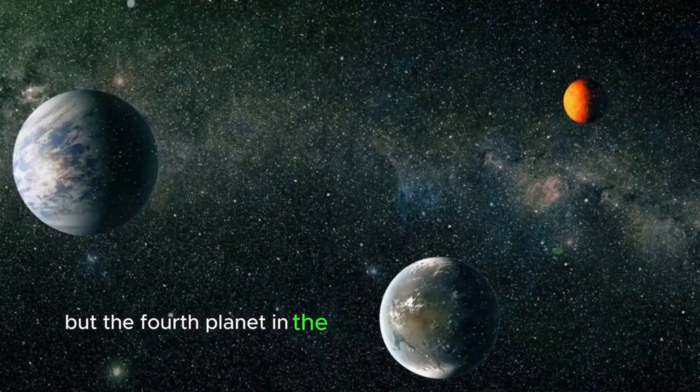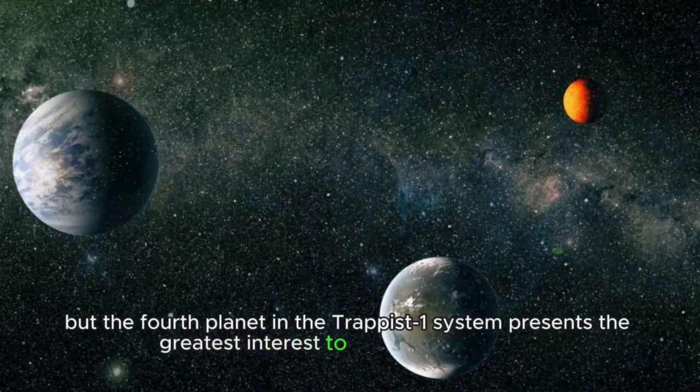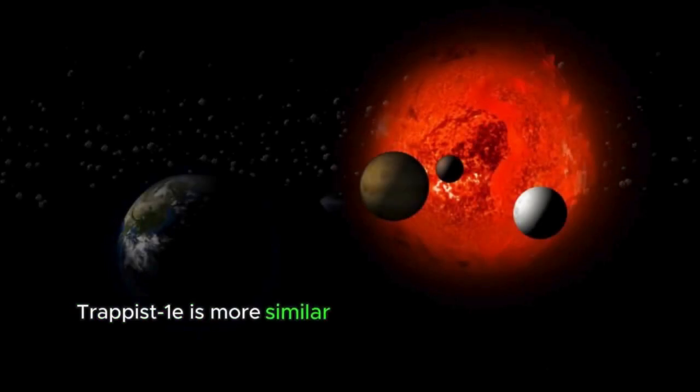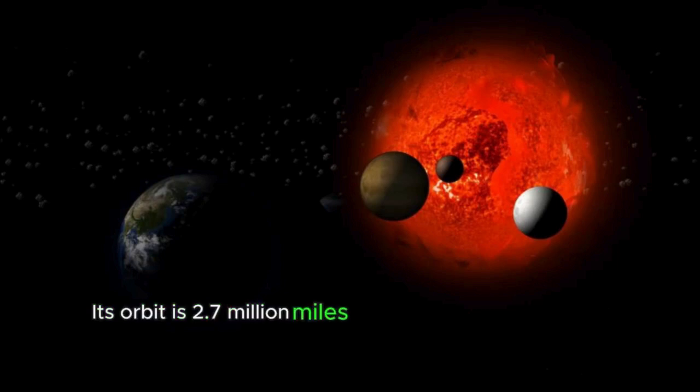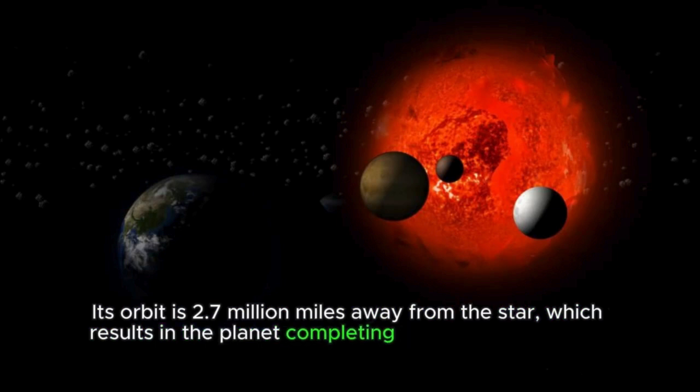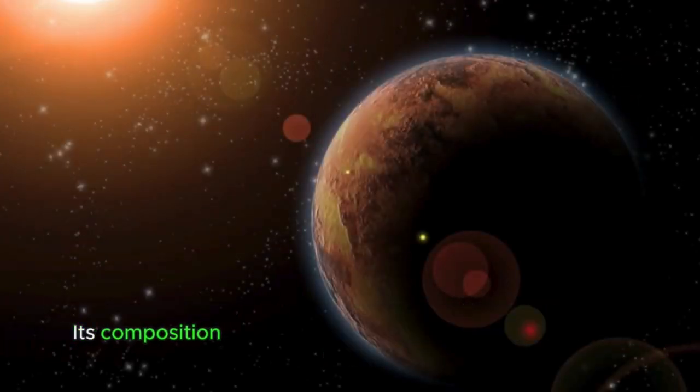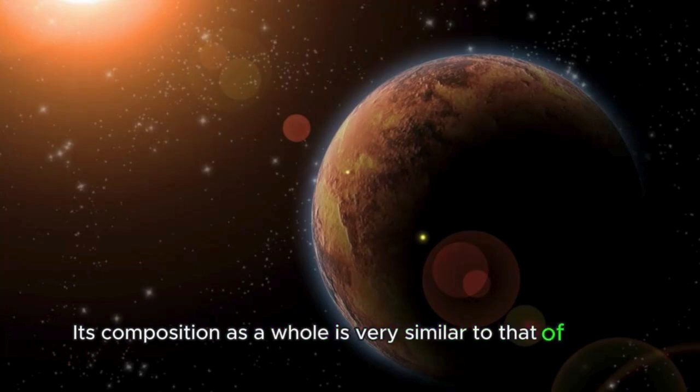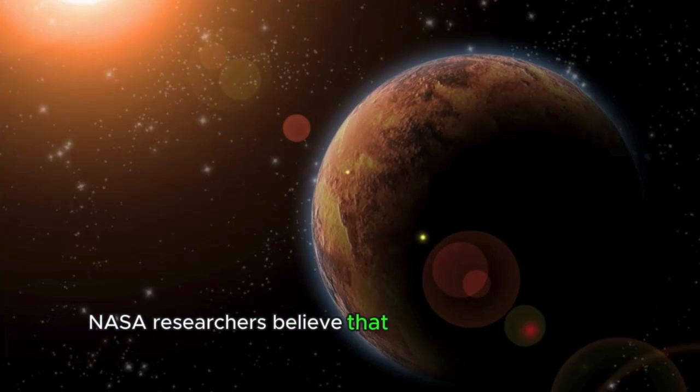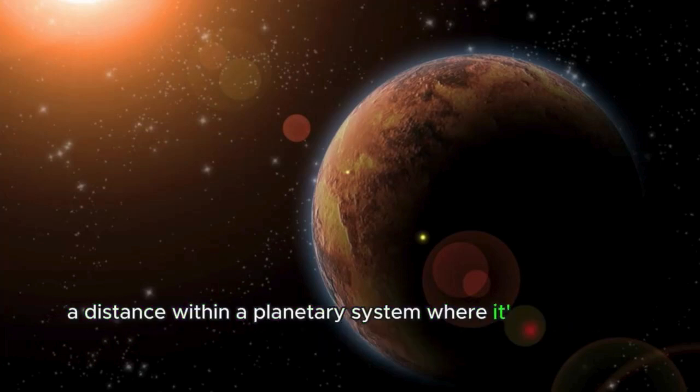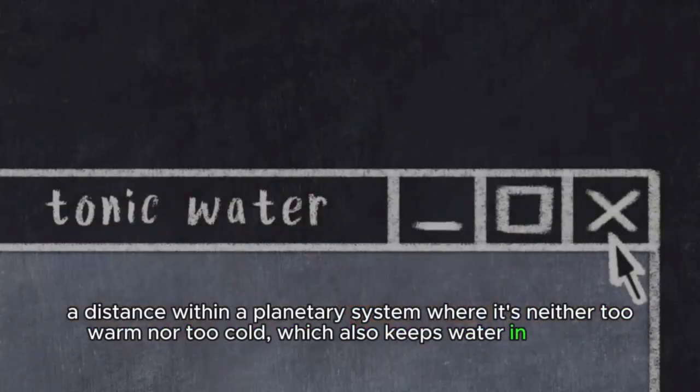TRAPPIST-1e is more similar to Earth than other planets in terms of radius, density, and heat received from the central star. Its orbit is 2.7 million miles away from the star, which results in the planet completing a full revolution in six days. Its composition as a whole is very similar to that of 1c. 1e is mainly composed of rock and metal. Does that mean there's no water there, like on 1c? NASA researchers believe that 1e is in a so-called habitable zone, a distance within a planetary system where it's neither too warm nor too cold, which also keeps water in its liquid form.